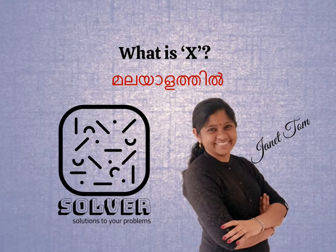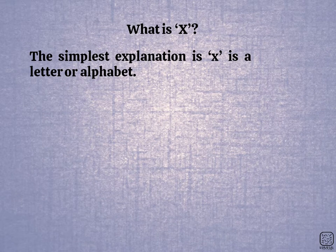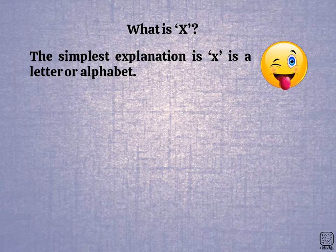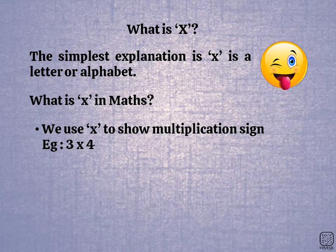In our school, we can use the value of x. We can use equations to solve x. This is a simple lateral explanation. x is a letter or alphabet — but that is not true. We use x to show multiplication. For example, 3 into 4 — that is the x. We are using x. This is not a letter.